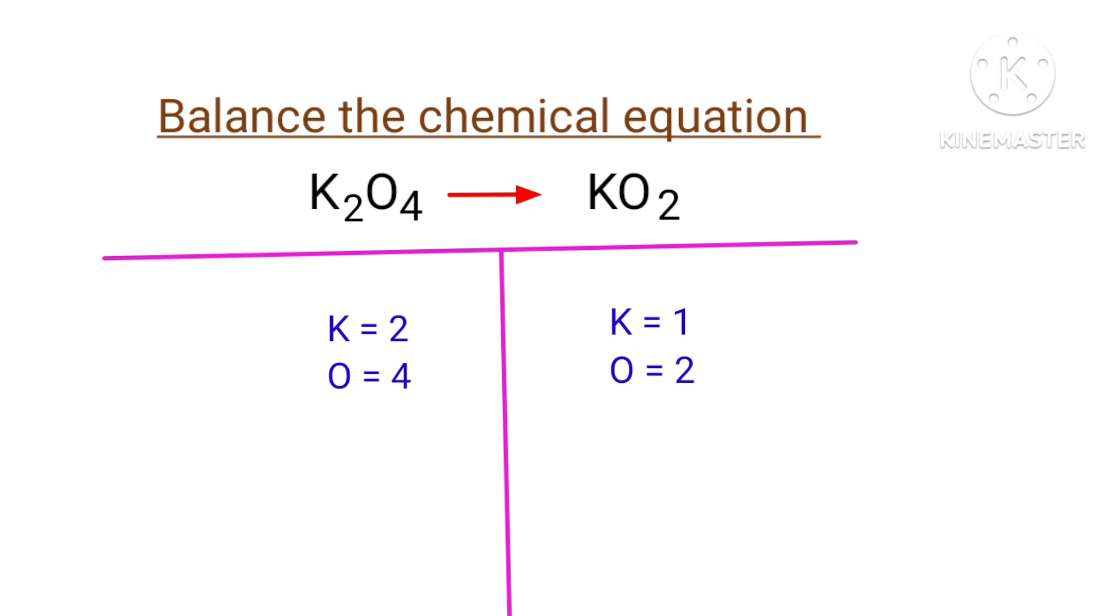If you observe this equation, the number of atoms at the left hand side are double to the number of atoms at the right hand side. So to balance this equation, we need to put a coefficient of 2 in front of the right side molecule.